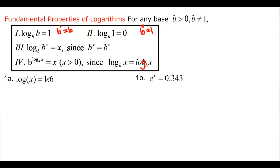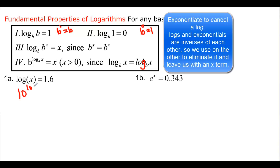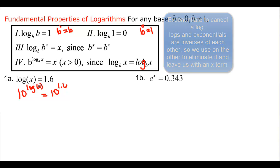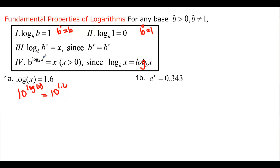We want to take these problems and use the properties to solve them. I have a log x and want to get just x. Using property 4, I take the base and raise both sides as exponents — this is called exponentiating. Since the base of my log is 10, I get 10 to the log x equals 10 to the 1.6, and since the bases are the same, it simplifies to x equals 10 to the 1.6.